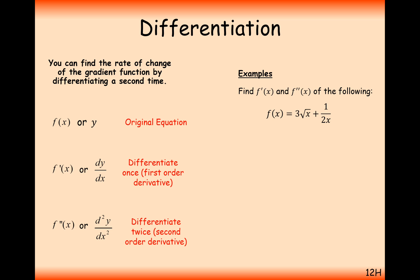For f of x equals 3 root x plus 1 over 2x, let's rearrange this into x to the n form. So it's going to be 3x to the half plus one half x to the minus 1.